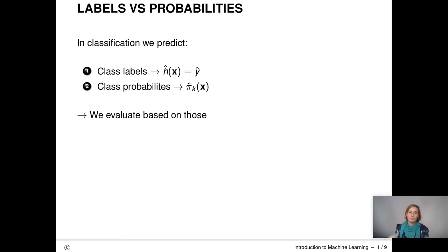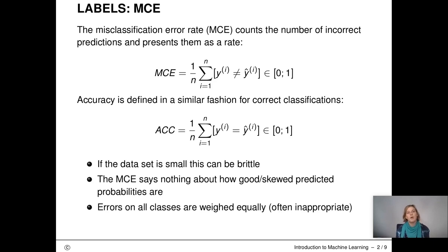In classification we sometimes predict class labels, other times we predict class probabilities. Which one we need depends on both the use case and the learner. So in evaluation we need to be able to evaluate labels if we're dealing with labels and if we're dealing with probabilities we should be able to evaluate those. In the following we will show whether we're dealing with labels or probabilities in the title of each slide, so you don't have to remember.